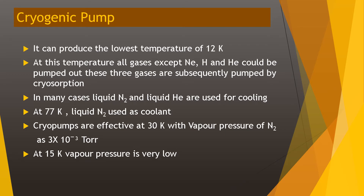These three gases — neon, hydrogen, and helium — are subsequently pumped by cryosorption. In many cases, liquid nitrogen and liquid helium are used for cooling. At 77 K, liquid nitrogen is used as a coolant. The cryopumps are effective at 30 K, with the vapor pressure of nitrogen at 3 × 10⁻³ Torr.